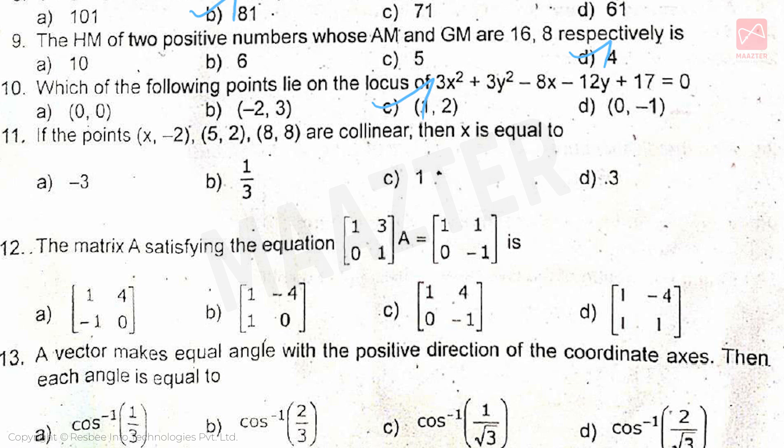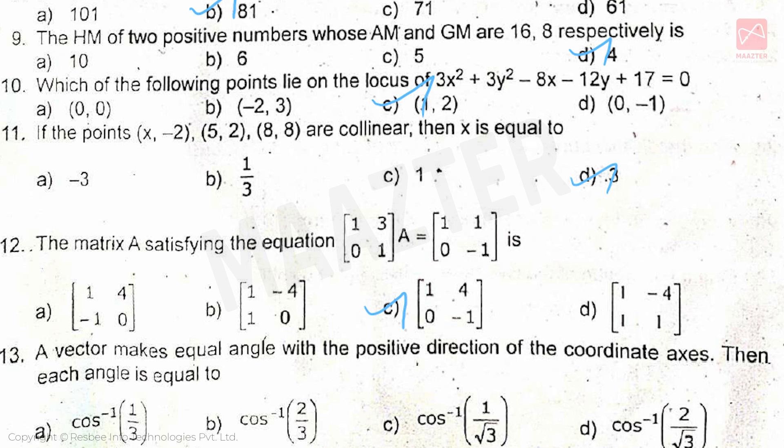Which of the following points lie on the locus of 3x² + 3y² - 8x - 12y + 17 = 0, answer is option C. Next, if the points (x, -2), (5, 2), (8, 8) are collinear, then x is equal to, answer is option D. Next, the matrix A satisfying the equation [1 3; 0 1] · A = [1 1; 0 -1] is, answer is option C.